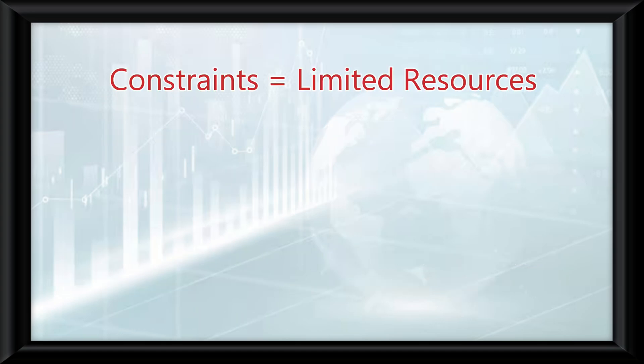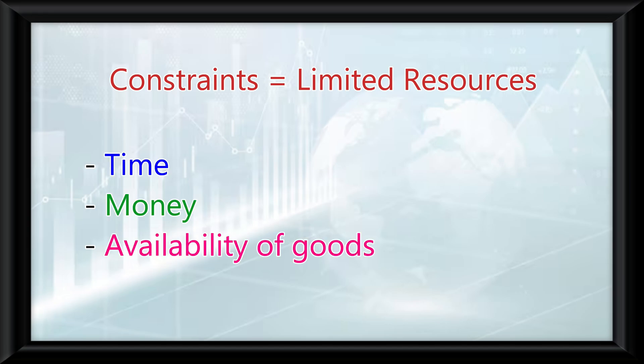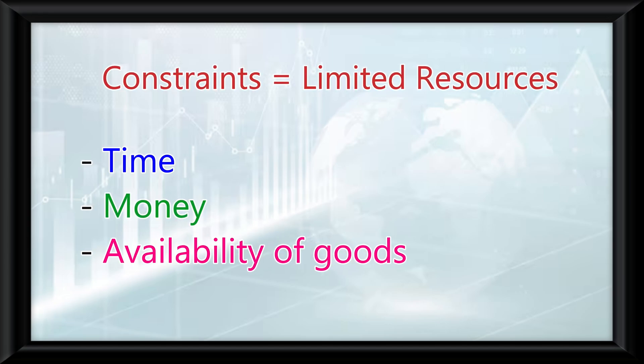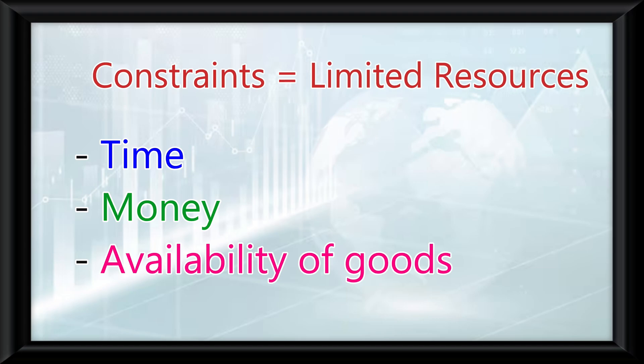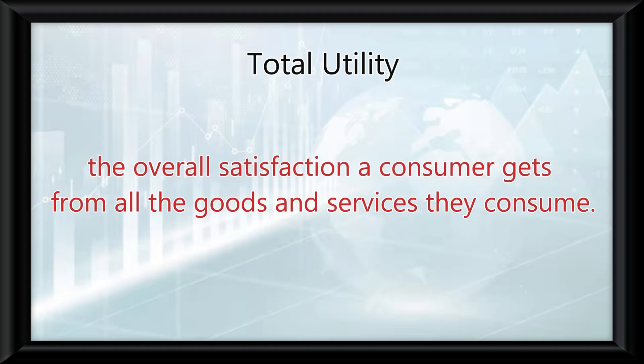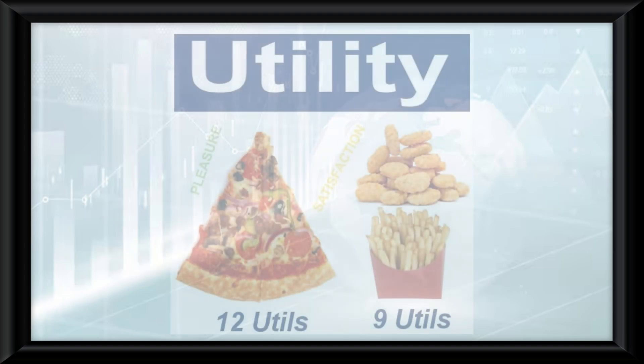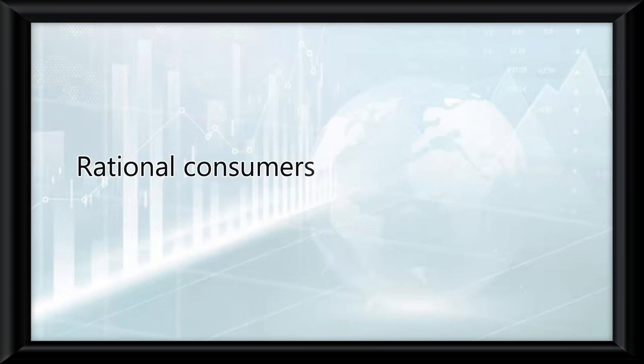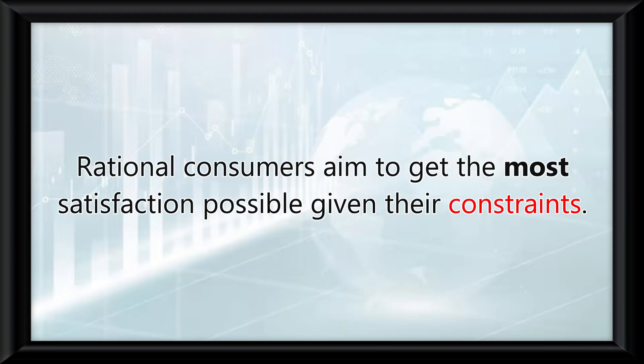Constraints refer to limited resources such as time, money, or availability of goods. Rational consumers try to make the best possible choice within these constraints. Total utility refers to the overall satisfaction a consumer gets from all the goods and services they consume. This is measured numerically in utils. Rational consumers aim to get the most satisfaction possible given their constraints.